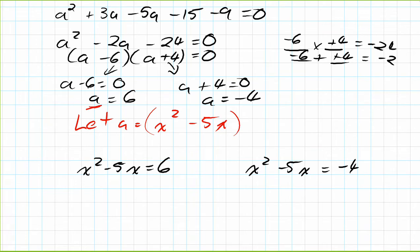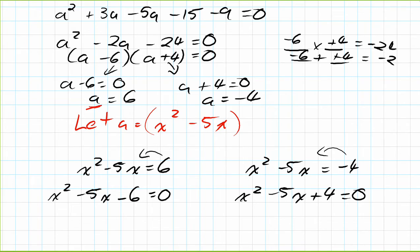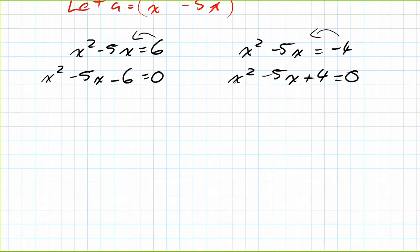So here again, you may recognize that you have two quadratic relationships. Again, we just have to set them each equal to zero. I'll move six in the one equation and negative four in the other, and we get x squared minus 5x minus 6 = 0, and on the other one we get x squared minus 5x + 4 = 0.